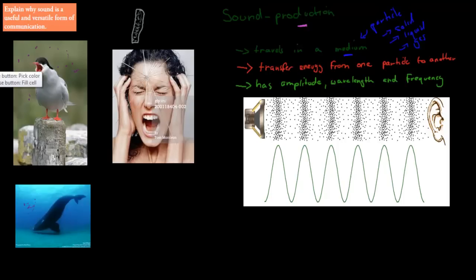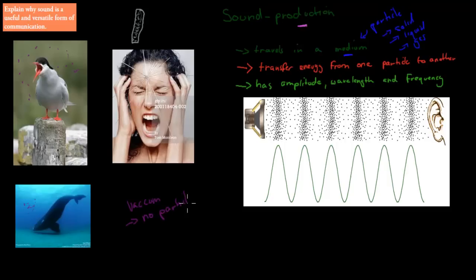Sound cannot travel in a vacuum, and a vacuum means there are no particles at all. The example would be space — space is a vacuum, which means sound cannot travel in space. So the first thing we know about sound is that it travels in a medium.